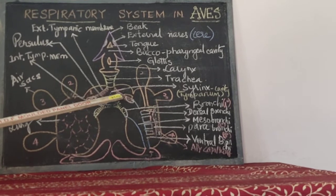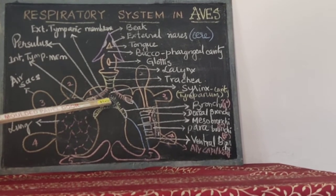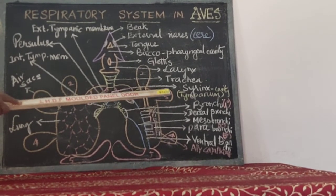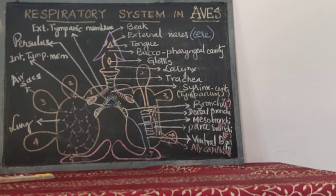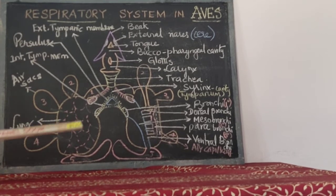At this particular location on the posterior side of the trachea, called the syrinx, sound production generally takes place.